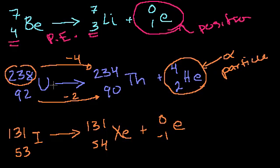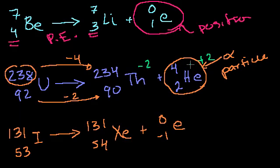You might say: wait, if I go from 92 protons to 90 protons, I still have 92 electrons, so wouldn't I now have a minus 2 charge? And this helium I'm releasing has no electrons — it's just a helium nucleus with a plus 2 charge. And you would be absolutely correct. But right when this decay happens, the thorium has no reason to hold on to those two extra electrons, so those two electrons depart and thorium becomes neutral again. And the helium nucleus very quickly grabs two electrons from wherever it's bumping into, so it becomes stable as well.